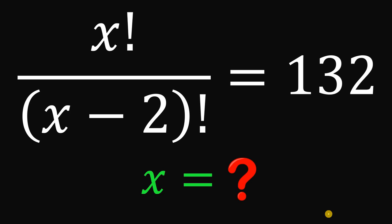For today's video, we will answer a math challenge given by one of our followers. And the question goes like this: solve for the positive integer value of x that satisfies this equation — x factorial over x minus 2 factorial equals 132.